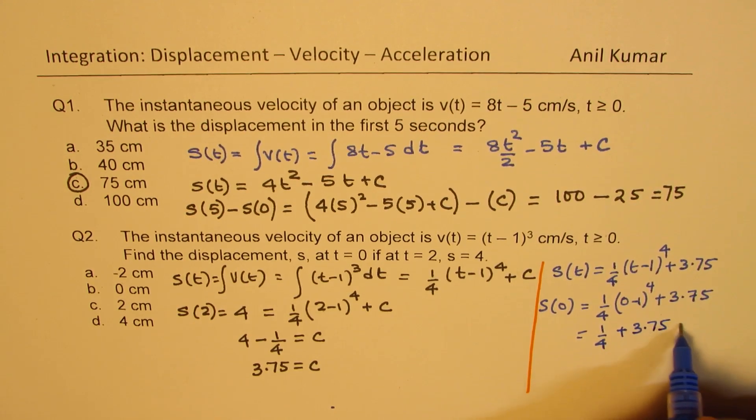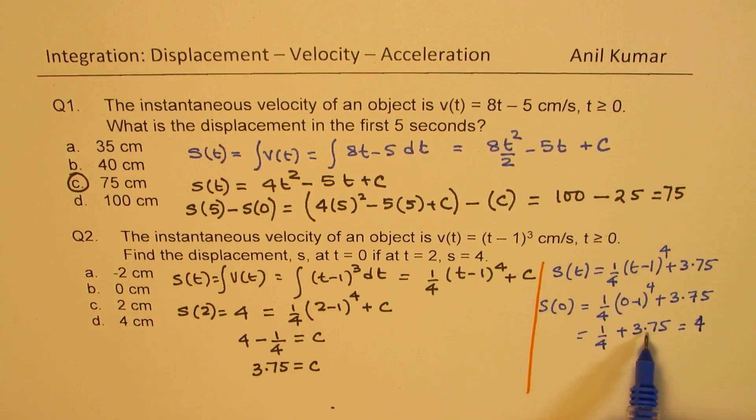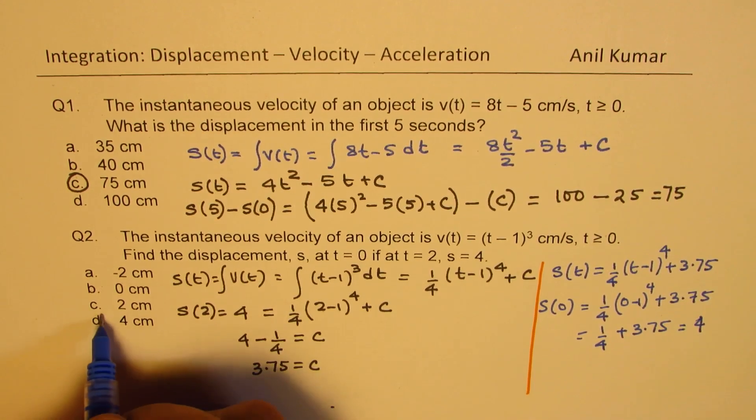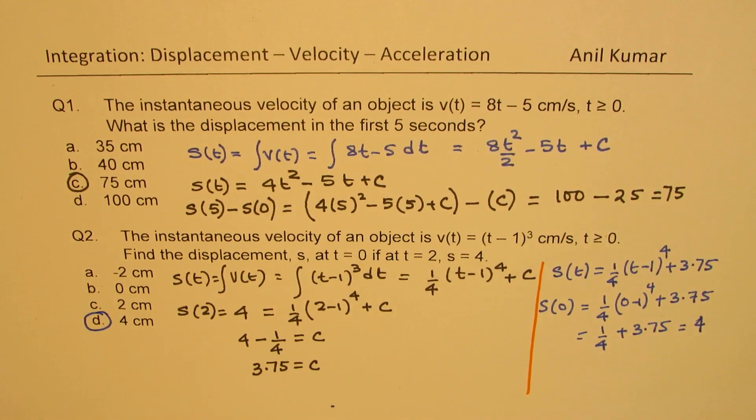Which is equal to 4. So quarter plus 3.75 gives us 4. So the option d is the correct option. So by integrating the velocity function, we can find the displacement and we can solve these questions. So I hope this concept is absolutely clear. Now let's take question number 3 and 4.